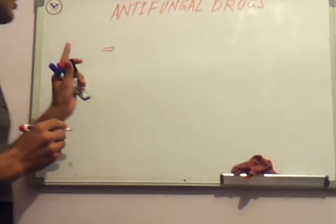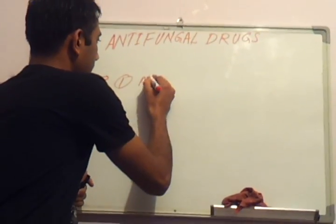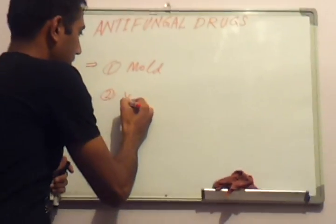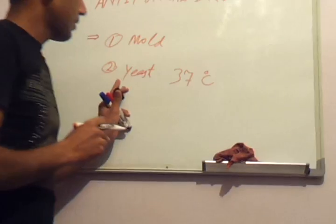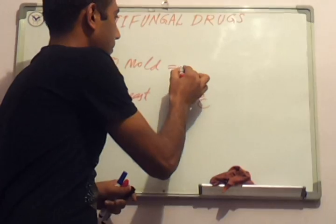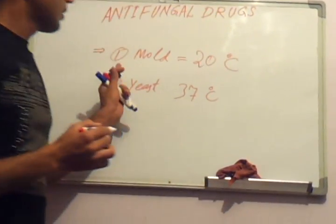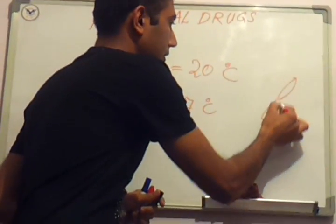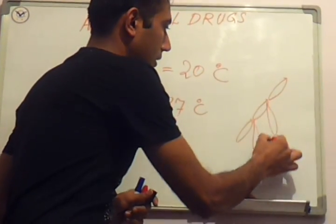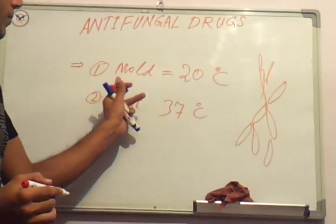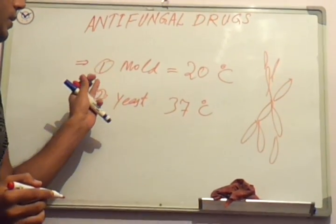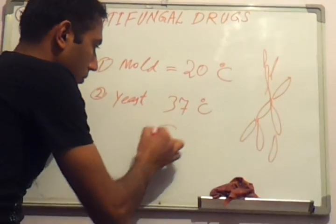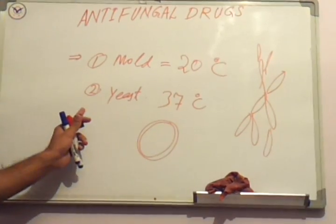Fungi occur in two forms in our body. One is mold and the second is yeast form. At body temperature — 37 degrees centigrade — fungi occur in yeast form, which is nearly oval in shape. At cold temperature, for example 22 degrees centigrade, they are present in mold form. Mold forms are hyphae of fungi, which are vegetative structures. These are present outside the body, for example on the surface of bread or on necrotic tissue.